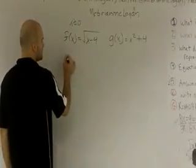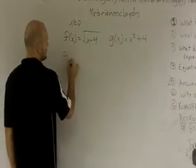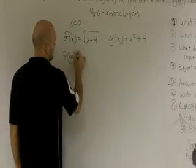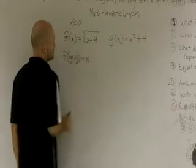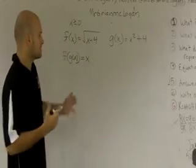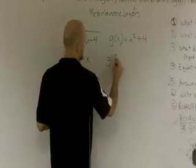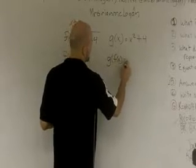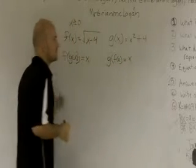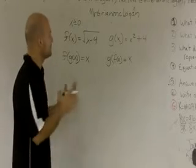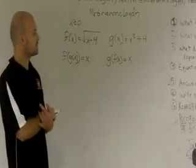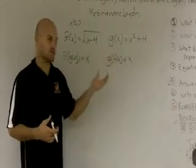So what I mean by composition, if I do f of g of x, I'm going to get out x. And it also has to work for the other way. If I do g of f of x, I'm also going to get out x. So when we're proving or showing that they're inverses, we're going to have to use the composition.